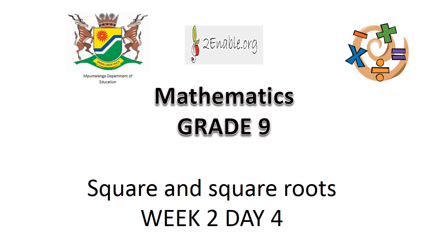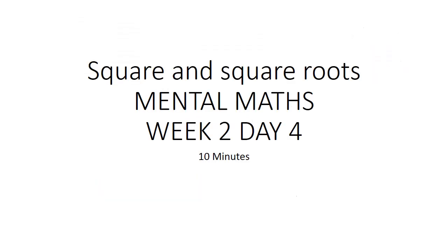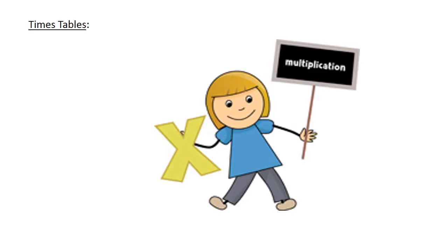Square and square root. Mental math. Times tables: 12 times 3 equals 36. 6 times 8 equals 48.